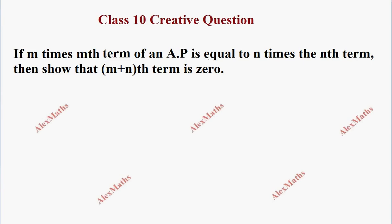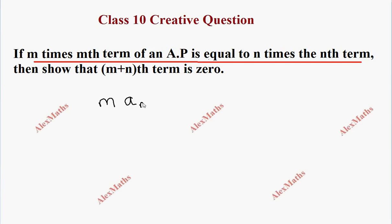Hi students, this is Alex here. In this problem, if M times the Mth term of an AP is equal to N times the Nth term, what would you do? We need to prove that the (M+N)th term of the AP is equal to 0.